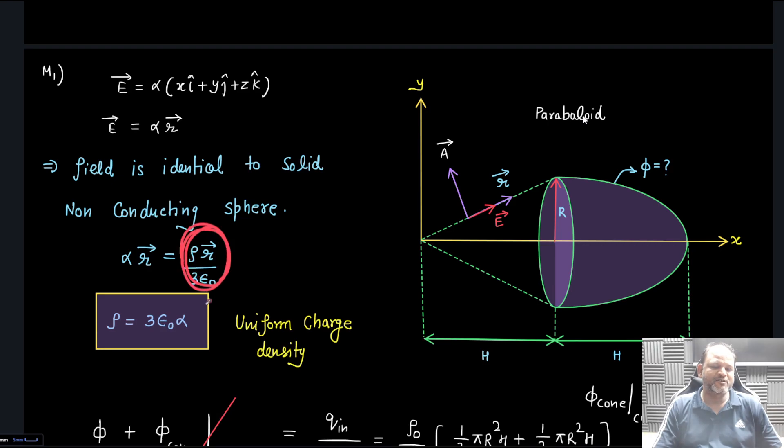Field is α r⃗, so field is identical to solid non-conducting sphere. We know that solid non-conducting sphere field is ρr/(3ε₀), so r vector we can remove. From here we get ρ = 3ε₀α - basically this entire space has constant density ρ₀. We can use the differential form of Gauss theorem also.